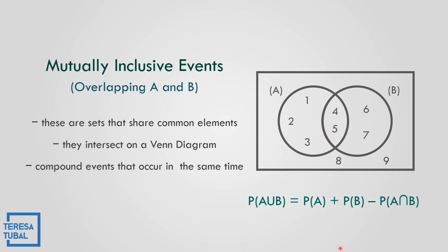So what could be the formula? The formula for mutually inclusive events: the probability of A union B is equal to the probability of event A plus the probability of event B minus the intersection of event A and event B.